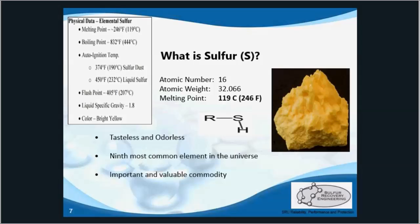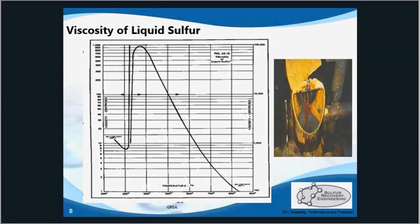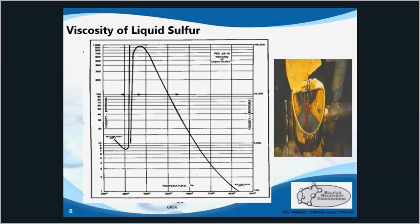Liquid sulfur exists as S8 and exhibits very unusual viscosity behavior, which we'll look at on the next page. Sulfur's melting point is 120 degrees Celsius, and after it melts at that temperature, it continues to drop in viscosity until about 300 degrees Celsius, and that's when you see it jump up and quickly become very viscous, like a gum-like substance.